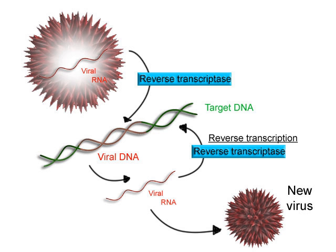In archaea and eukaryotes, the functions of the bacterial general transcription factor σ are performed by multiple general transcription factors that work together. In archaea, there are 3 general transcription factors: TBP, TFB, and TFE. In eukaryotes, in RNA polymerase II-dependent transcription, there are 6 general transcription factors: TFIIA, TFIIB (an ortholog of archaeal TFB), TFIID (a multi-subunit factor in which the key subunit, TBP, is an ortholog of archaeal TBP), TFIIE (an ortholog of archaeal TFE), TFIIF, and TFIIH. In archaea and eukaryotes, the RNA polymerase-promoter closed complex is usually referred to as the preinitiation complex.